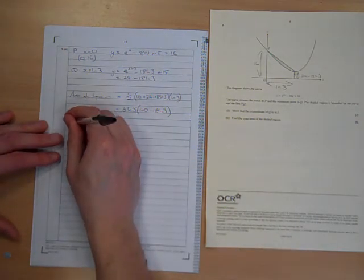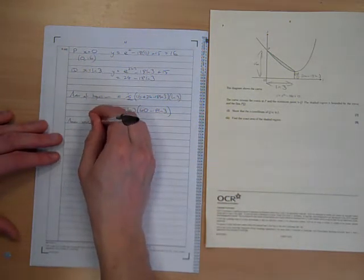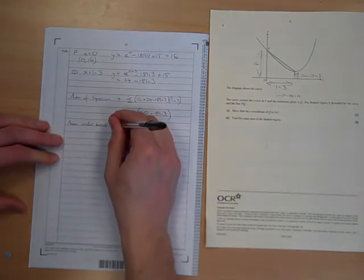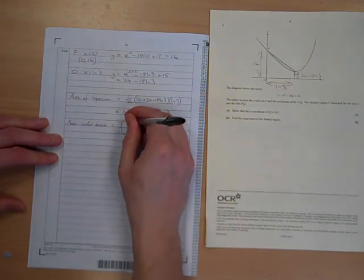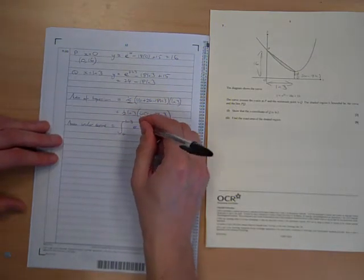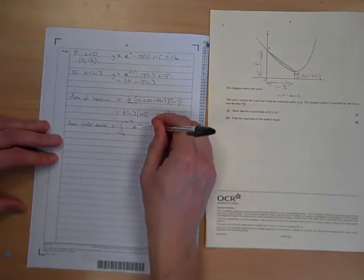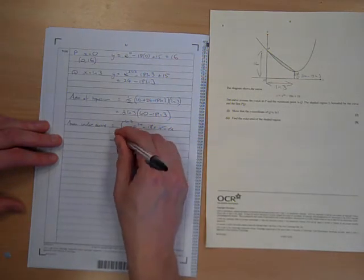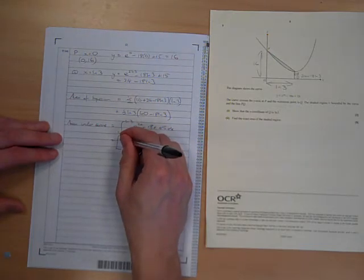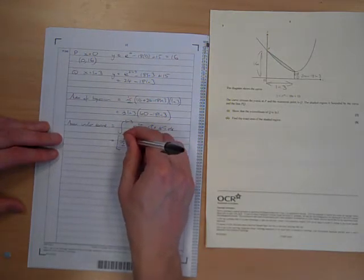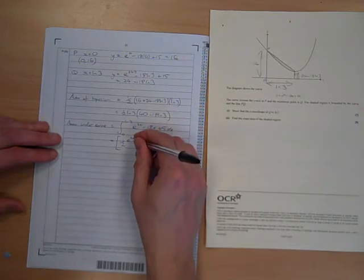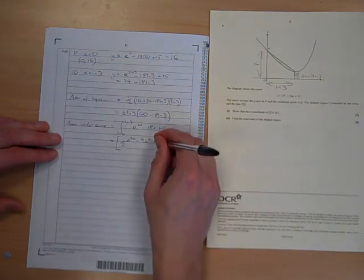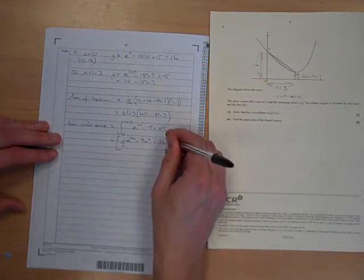Area under curve is the integral from 0 to ln3 of e to the 2x minus 18x plus 15, which is e to the 2x would go to half e to the 2x minus 18x squared over 2. So 9x squared plus 15x between 0 and ln3.